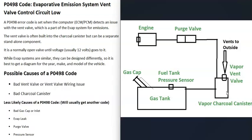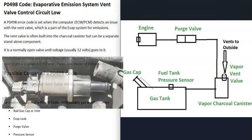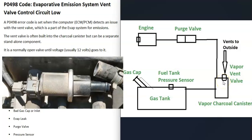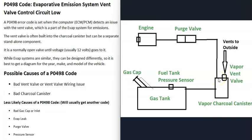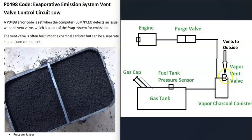The charcoal canister is kind of like storage for the gas vapors. Either built into the charcoal canister or located right next to it is what's called a vent valve. The vent valve is a normally open valve — when there's no power going to it, it's open, but when power goes to it, it closes. The vent valve stays open and vents air to the outside so that when you fill up the gas tank, the incoming gas pushes vapors toward the EVAP system. Those vapors go through the charcoal canister, which is full of charcoal pellets, filtering through and then out the vent valve.